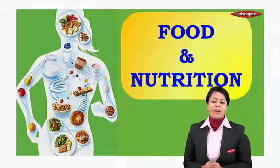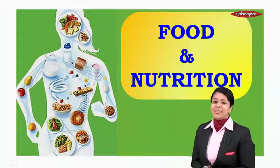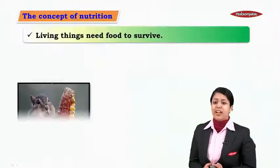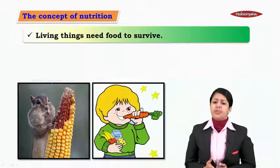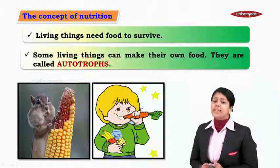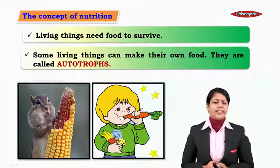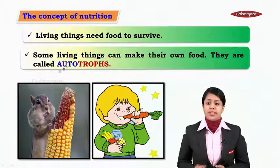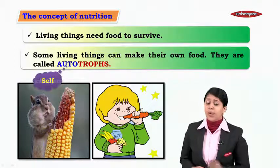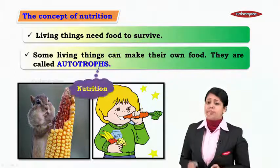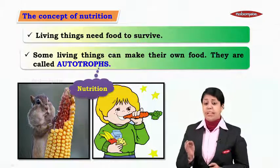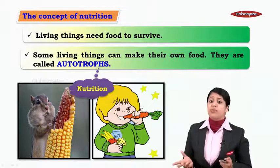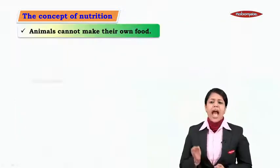Hello students, today we are going to start with the new chapter of science — Food and Nutrition. Living things need food to survive. Some living things can make their own food; they are called autotrophs. 'Auto' means self, 'troph' means nutrition. So an autotroph is the one who can make their own food.